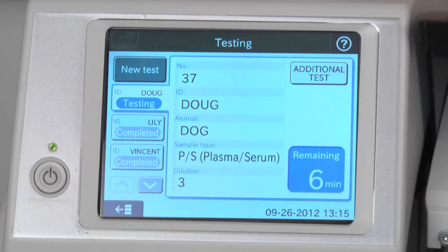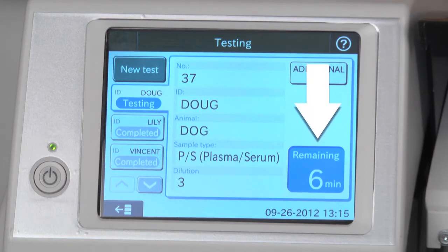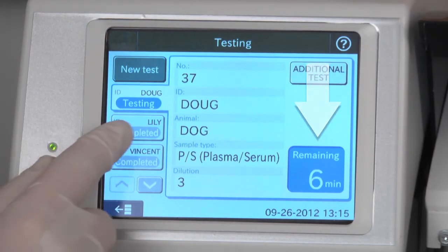The Element DC provides a countdown to displayed results for individual samples as well as an option to see the remaining time to completion for all tests in your queue.